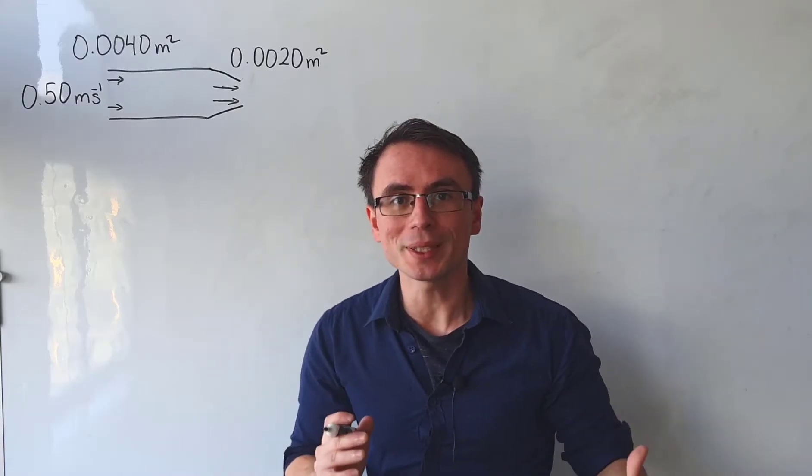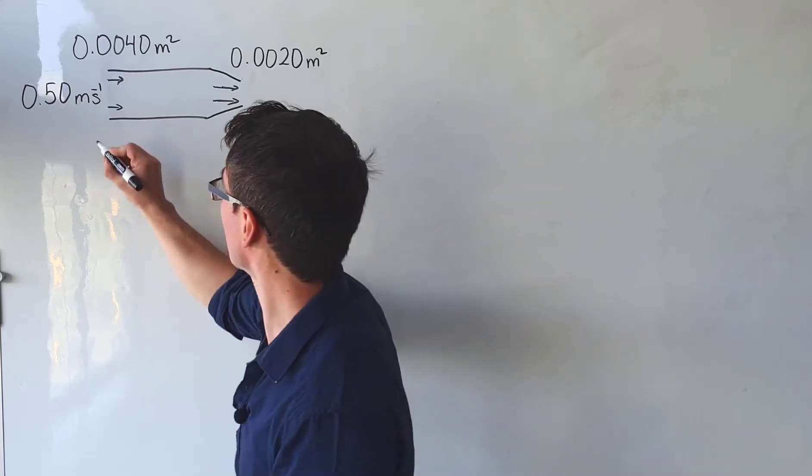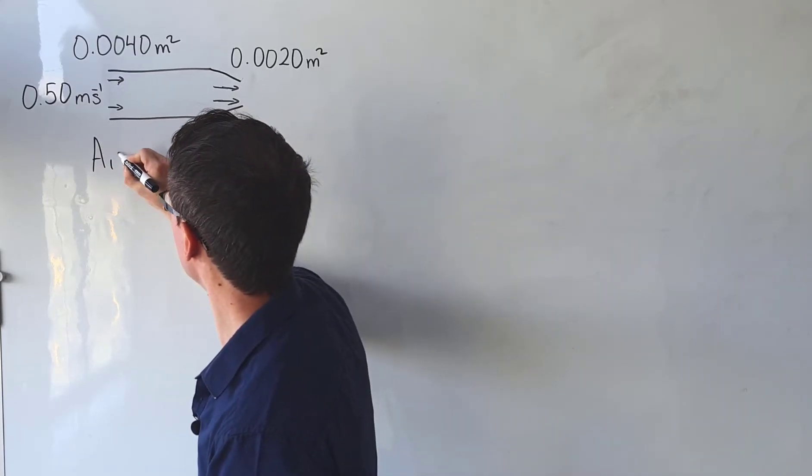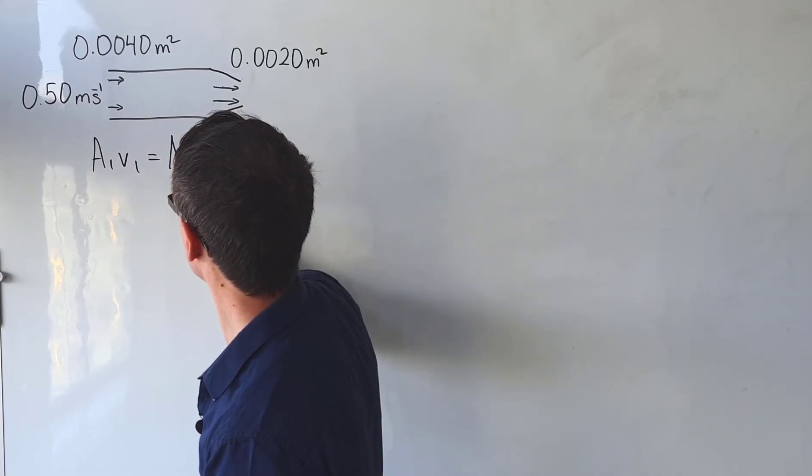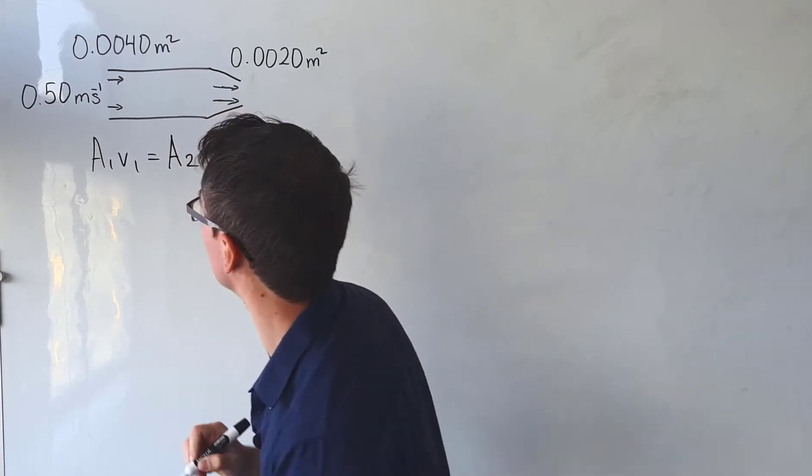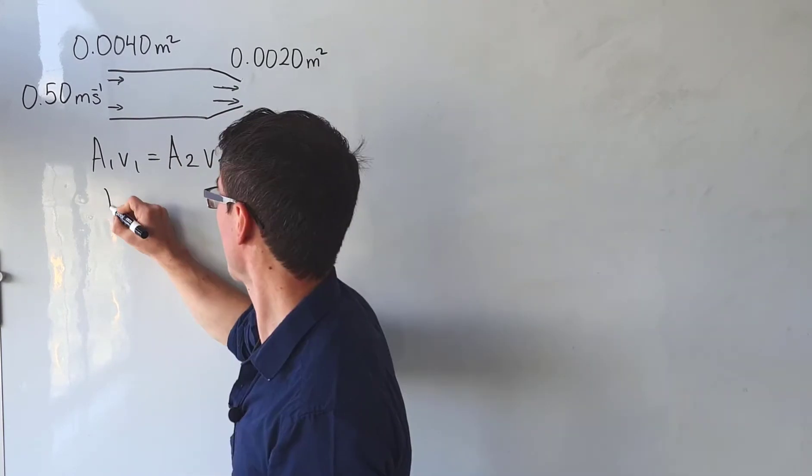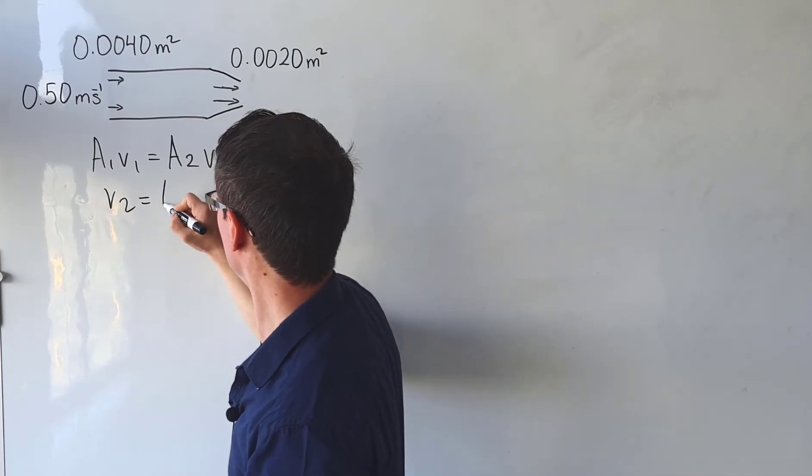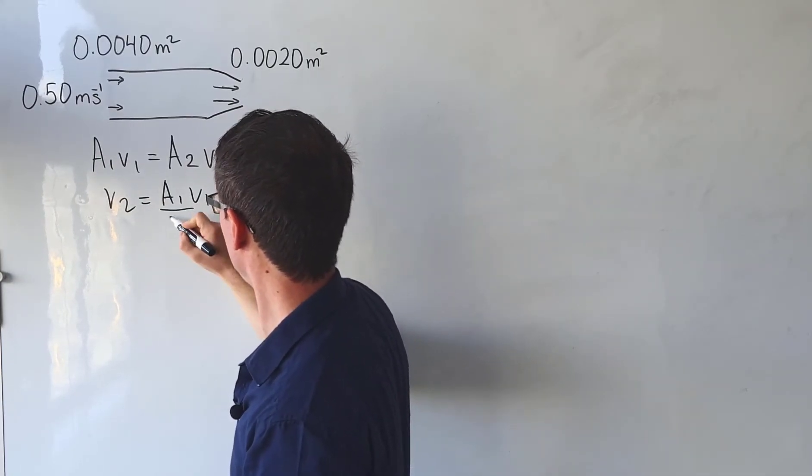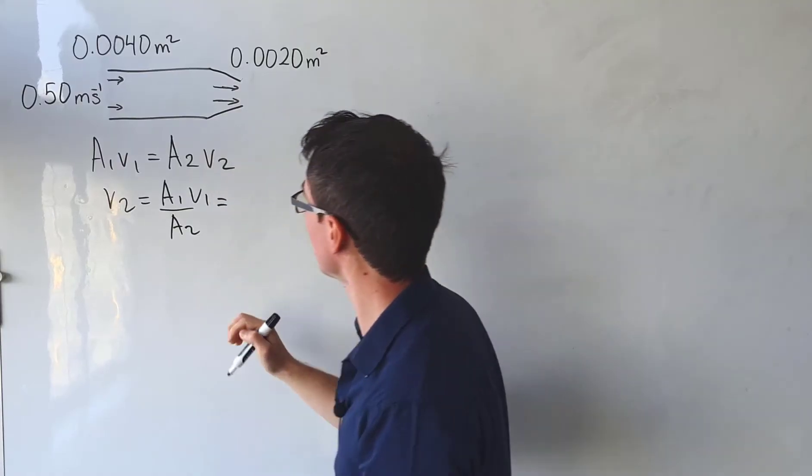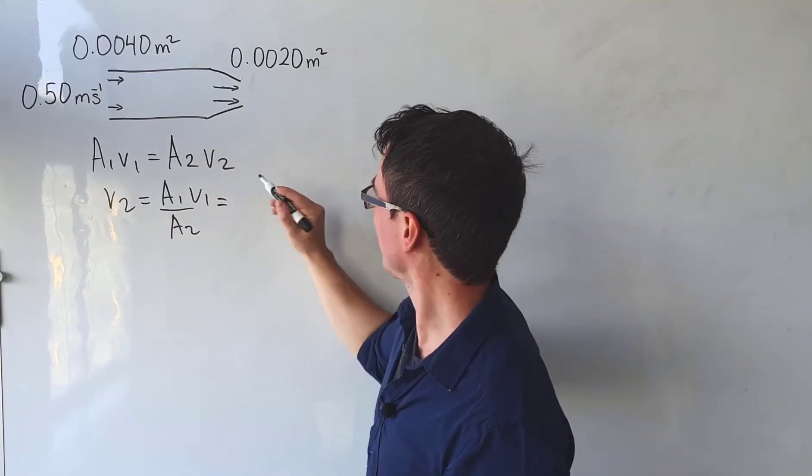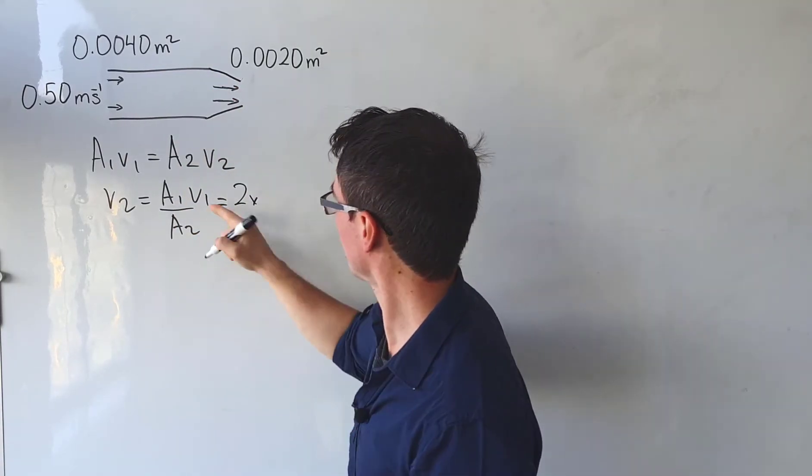The first thing we need to do with this question is use the continuity equation: A1V1 equals A2V2. This will allow us to find the final speed of the fluid. So V2 will be equal to A1V1 divided by A2. A1 over A2 will just be equal to 2.